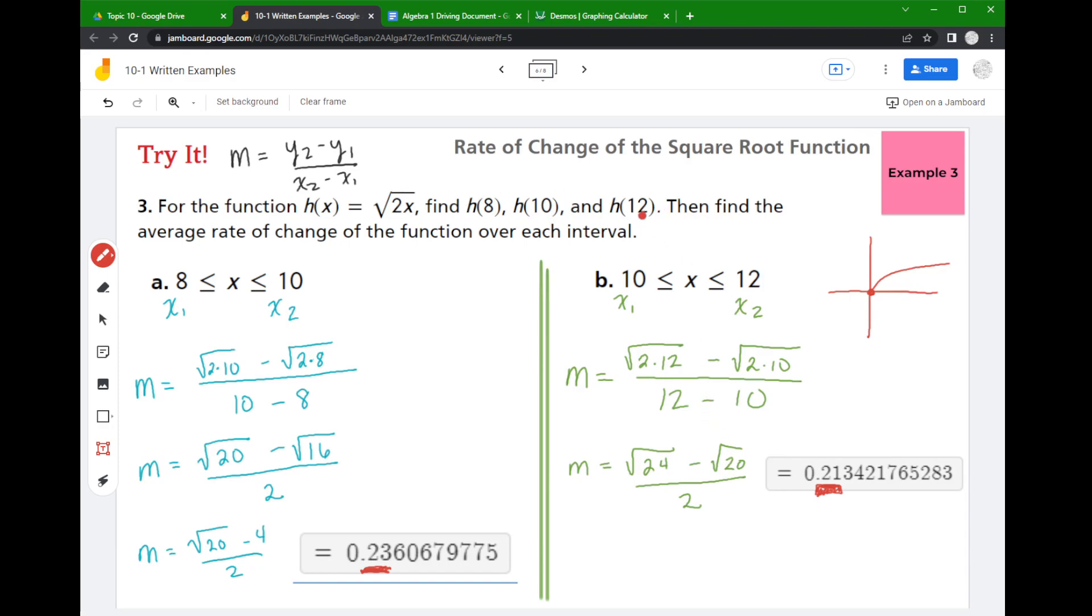But there we have it, guys. I know it asked me to find h of 8, h of 10, and h of 12—they're all just kind of embedded right there. To be honest with you, I don't like doing it in separate parts. Anyway, that is the rate of change of the square root function. Until next time.